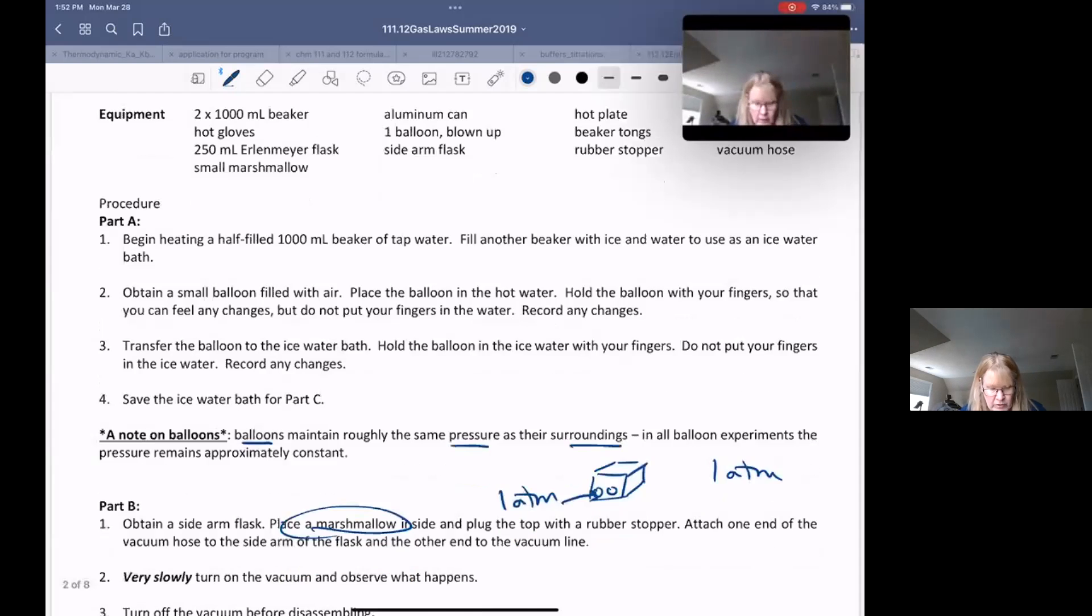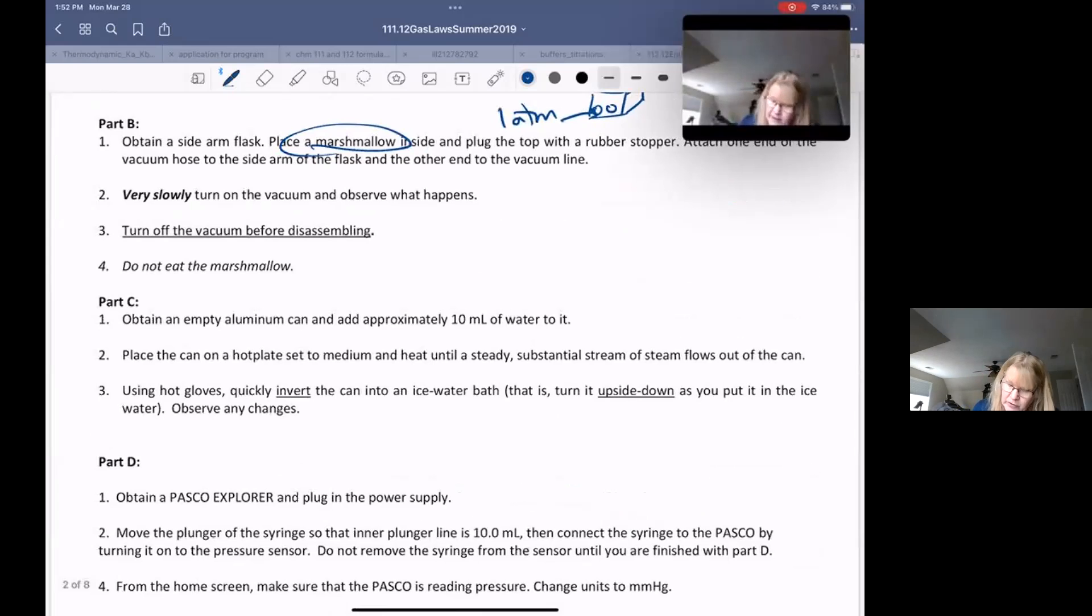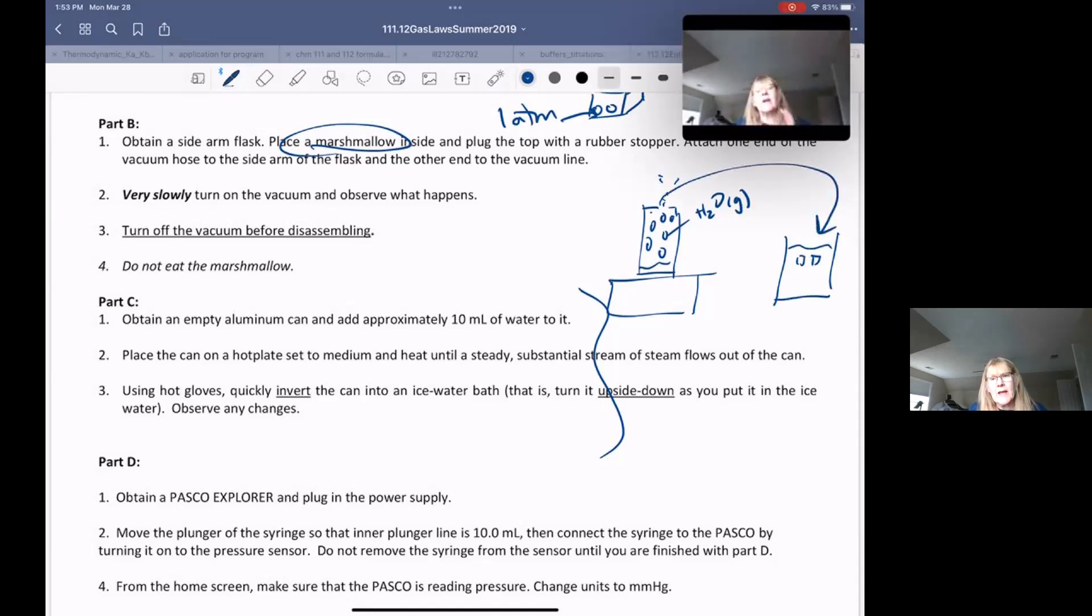Also, when you take a look at your aluminum can, the purpose of the aluminum can experiment is you're going to put a can on a hot plate with a little bit of water in it. When you do this, the water is going to boil and fill the aluminum can with water as a gas. Water vapor is going to come out the top as well. You're going to then take a big beaker with ice cubes in it and invert the can into the ice water.